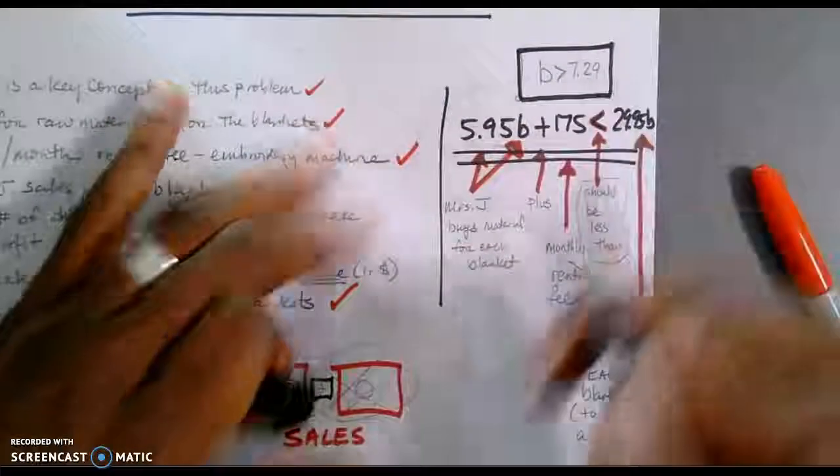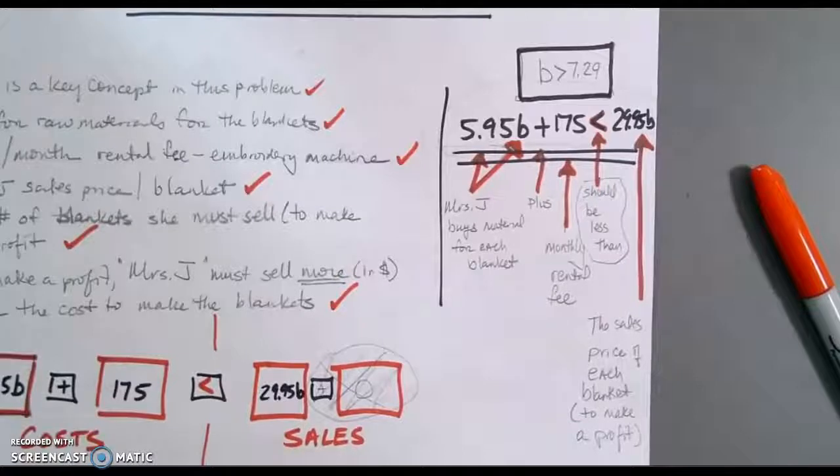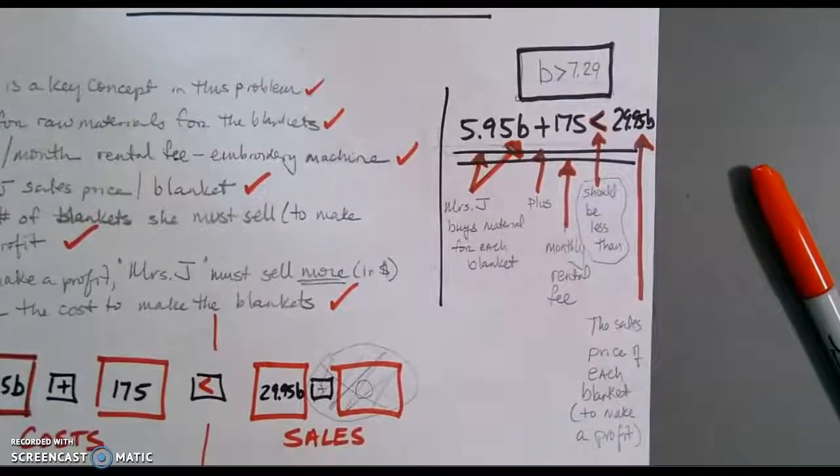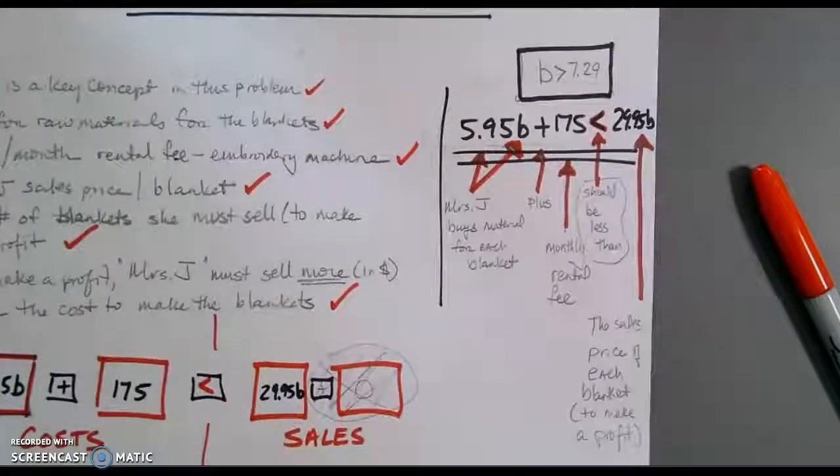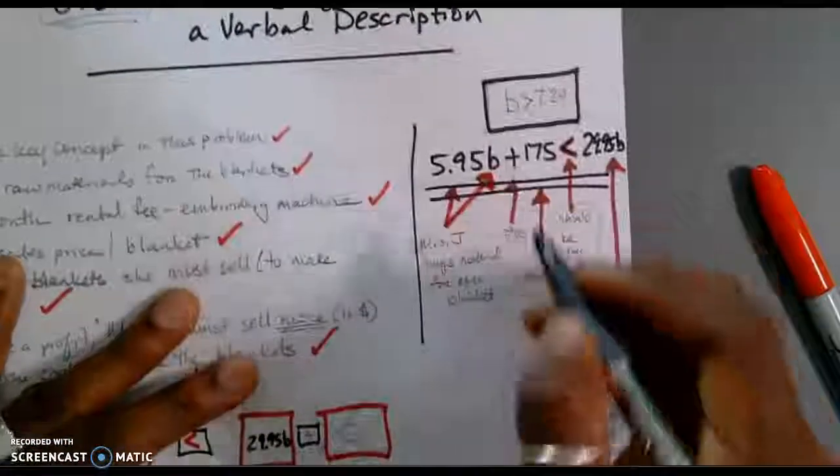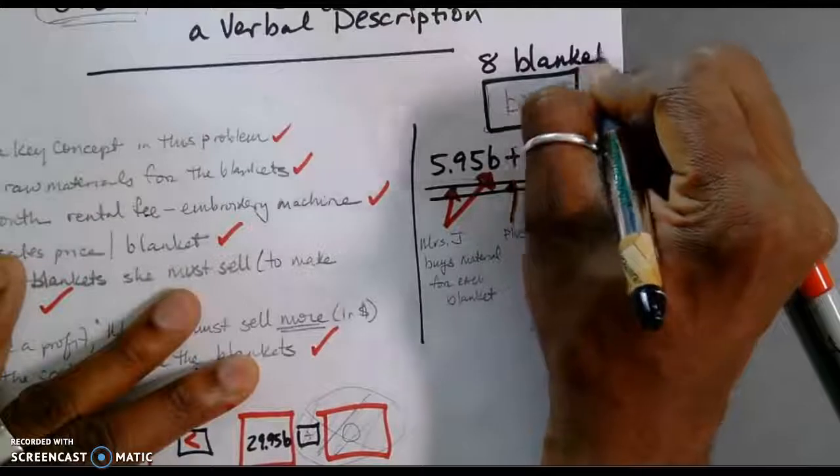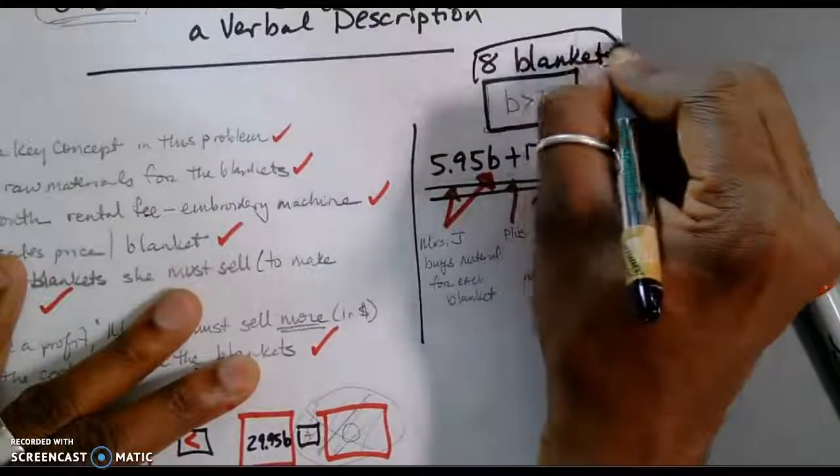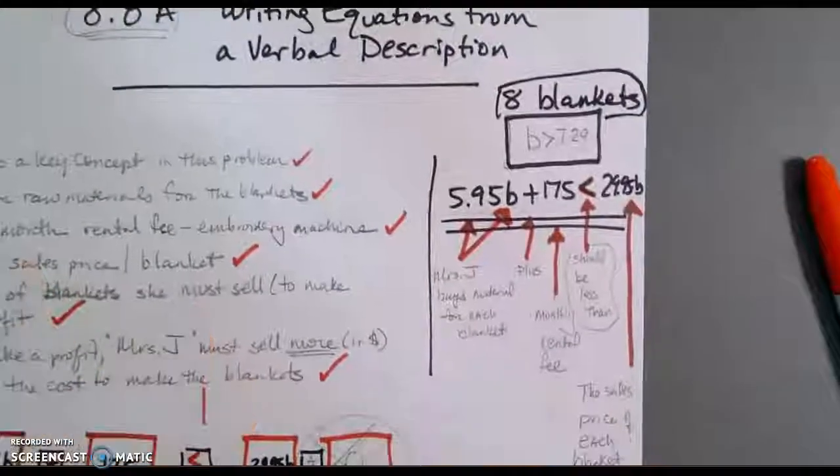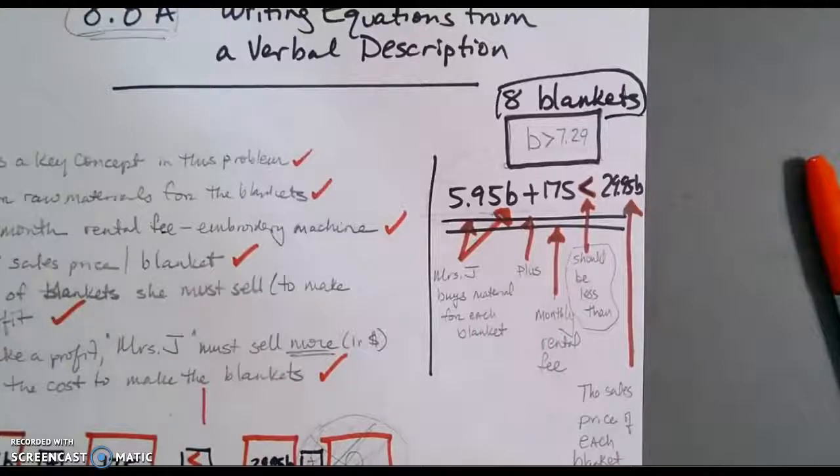No, she's not going to do that. So, it's either going to be 7 blankets or 8 blankets. How many blankets must she make, at the very least, in order to make a profit? She must make at least 8 blankets in order to make a profit. And that was done through the magic of YouTube.